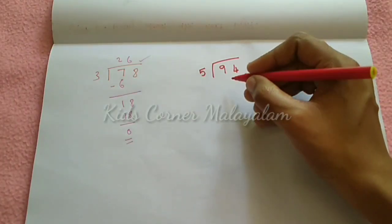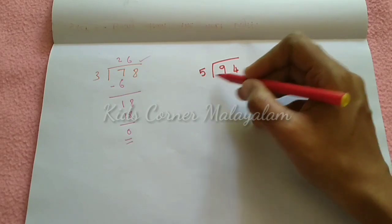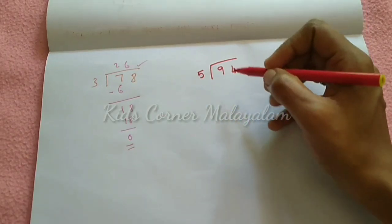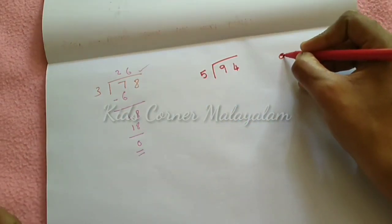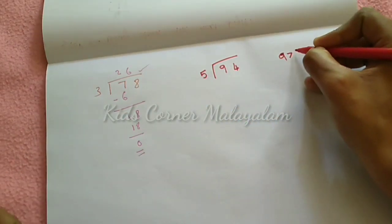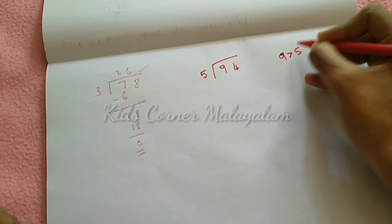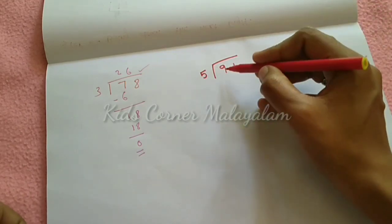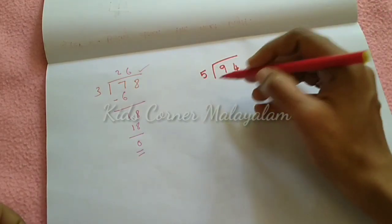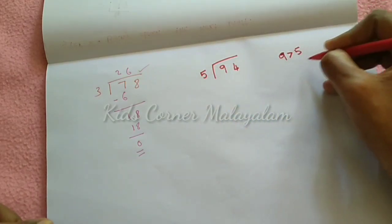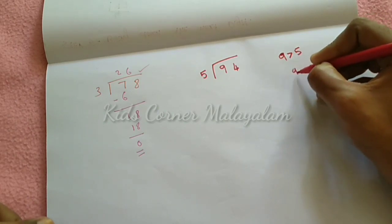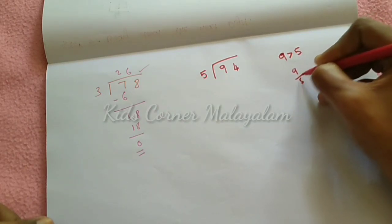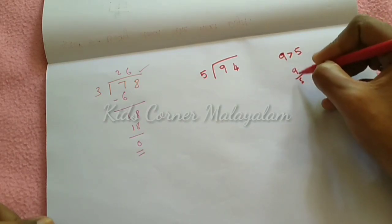First we compare: 9 is greater than 5 — correct. Then we divide: 9 divided by 5.